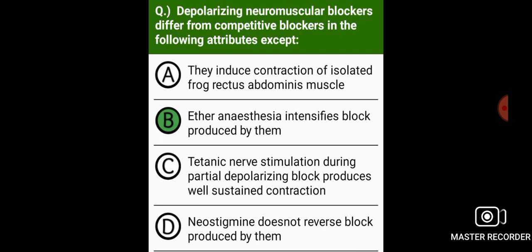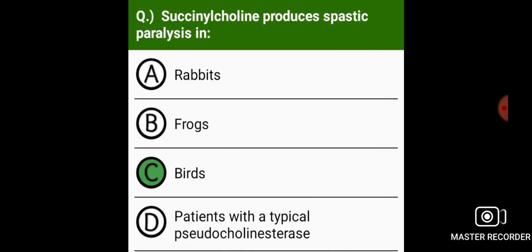Depolarizing neuromuscular blockers differ from competitive blockers in the following attributes except: ether anesthesia intensifies the block produced by them. Succinylcholine produces spastic paralysis in birds.